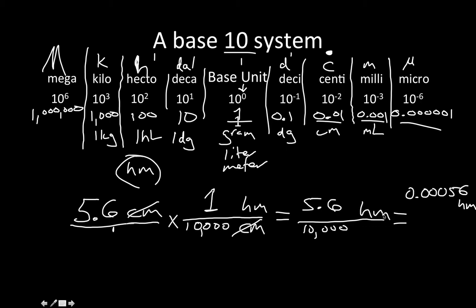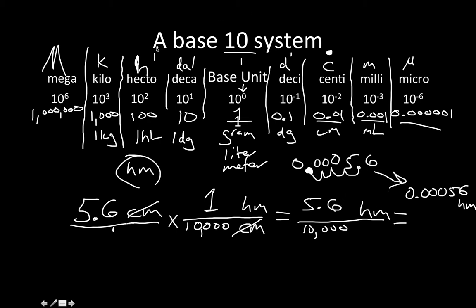Because it's a base-10 system, all we're really doing is moving the decimal place. We moved four places, which is why we got four zeros before the 5.6, giving us 0.00056 hectometers. Pretty simple — all because it's a base-10 system.